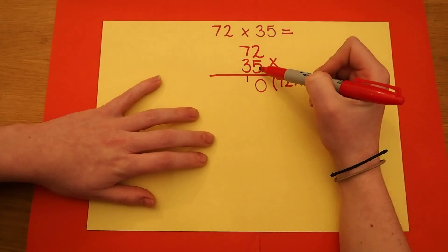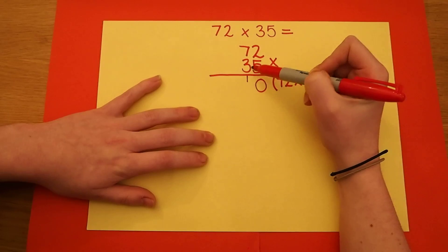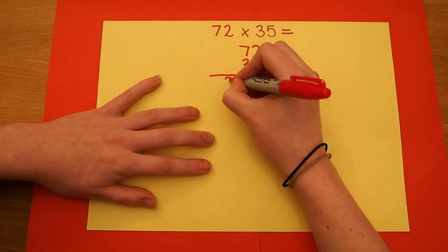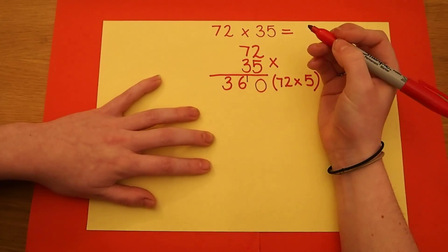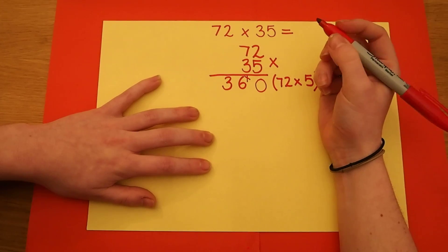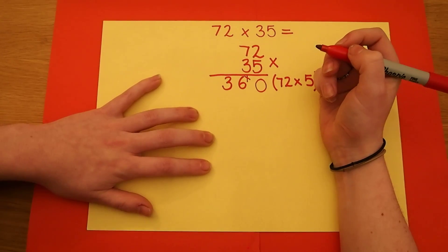7 times 5 is 35 plus the one that I've carried which is 36. And I have no more numbers left to multiply. I'm going to cross out the number that I carried so that it doesn't confuse me later on.